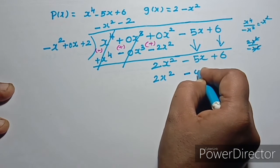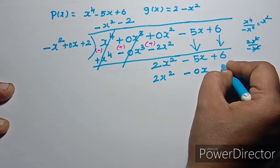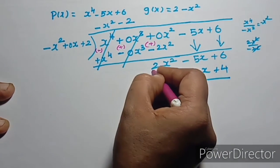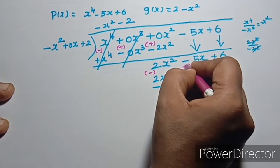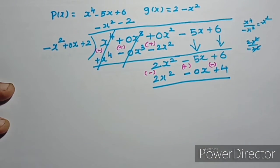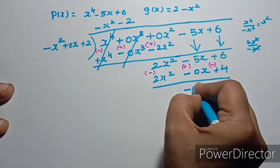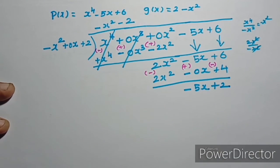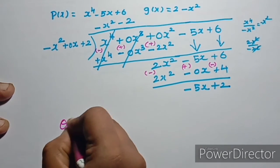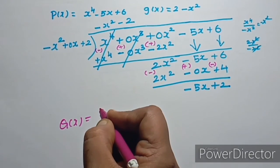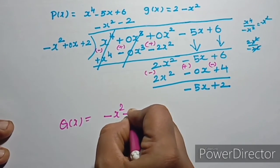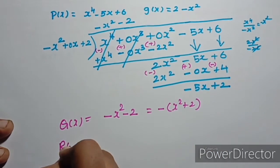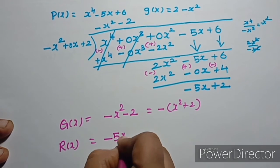Minus 2 into x square is 2x square, minus 2 into 0x is minus 0x, minus 2 into plus 2 is plus 4. We change signs. So minus 5 plus 0 is minus 5x, and 6 minus 4 gives plus 2. Therefore, quotient q(x) is equal to minus x square minus 2, and remainder r(x) is equal to minus 5x plus 2.